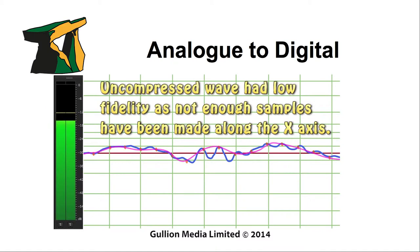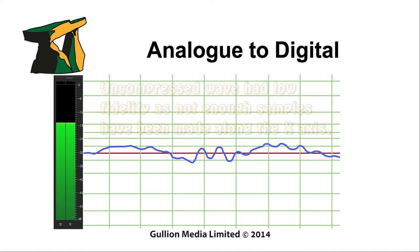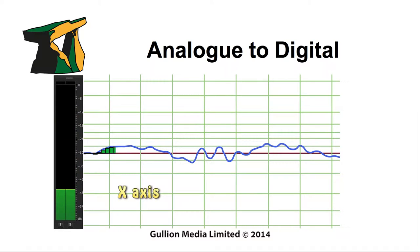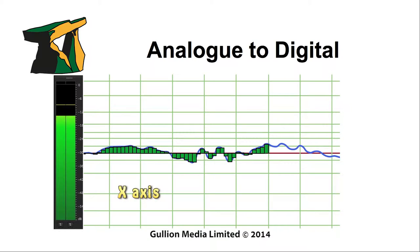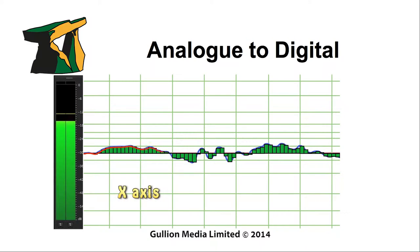To achieve this, the wave is sampled so many times per second along the x-axis. A second measurement is taken along the y-axis to measure the amplitude of the wave, also known as bit depth.